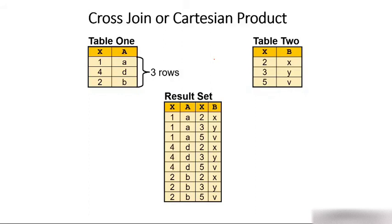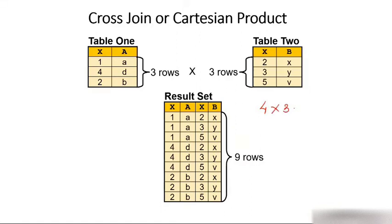Table 1 has 3 rows, table 2 has 3 rows, and the result set has 9 rows. If the first table had 4 rows and the second table had 3 rows, then the resultant table would have 12 rows. In our example, both tables have 3 rows, so we get 9 rows as the result. These things are theoretical — let me run this query for Cartesian product so you will understand everything clearly.